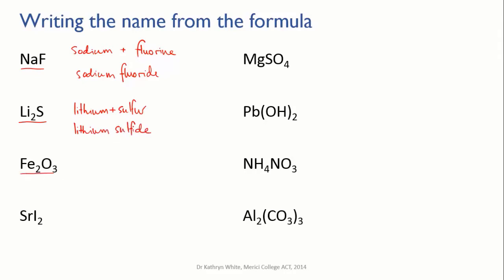This one, Fe2O3 - Fe is iron, one of those elements that doesn't have an obvious symbol. It's made from iron and oxygen. The iron keeps its name, the oxygen is the anion, so it becomes oxide. The name is iron oxide.